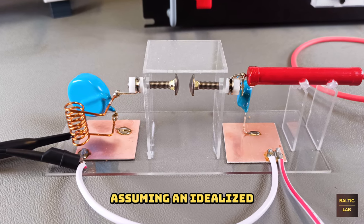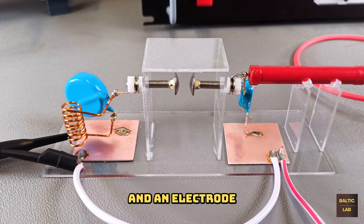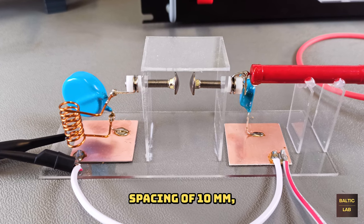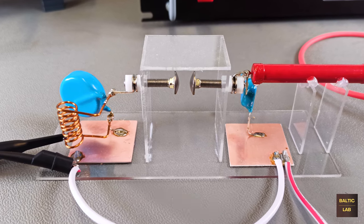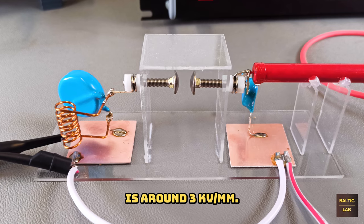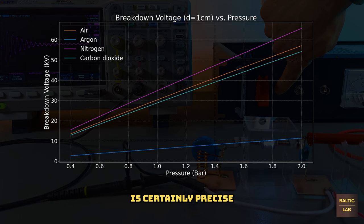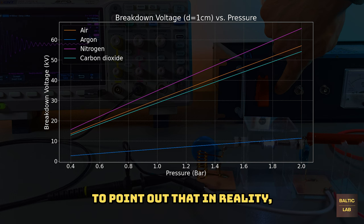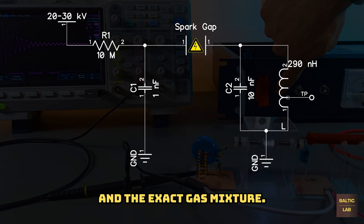Assuming an idealized homogenous field and an electrode spacing of 10 mm, the breakdown voltage of air is around 3 kV per mm. While this rule of thumb is certainly precise enough for this experiment, I would just like to point out that in reality the exact breakdown voltage depends on a lot of parameters, such as temperature, humidity, and the exact gas mixture.